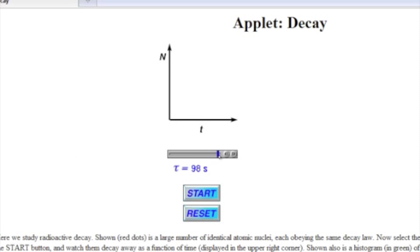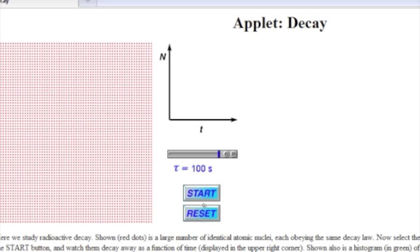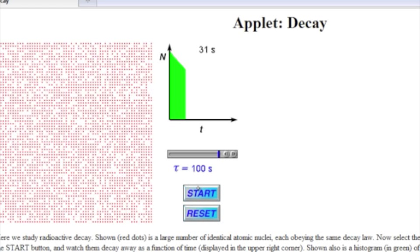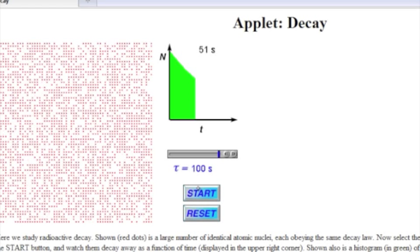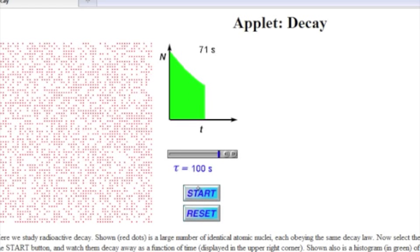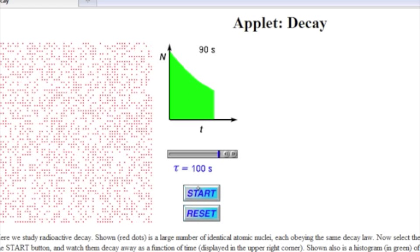So if we increase the half-life to 100 seconds and restart the decay, you can see that the rate is slower. So the longer the half-life, that means it takes that much time for half of the original sample to disappear.